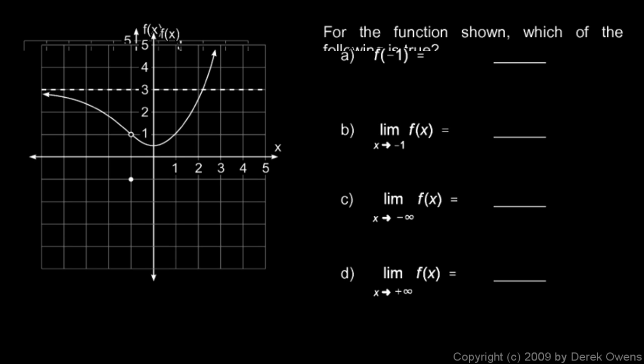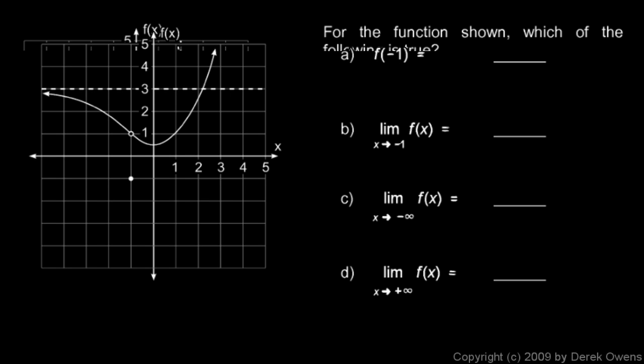Here's another example. We're given a graph, and we're told to find these things. And we can find these values from the graph. We don't have to have the function. In fact, we don't have a definition of the function, just the picture. So first of all, f(-1).